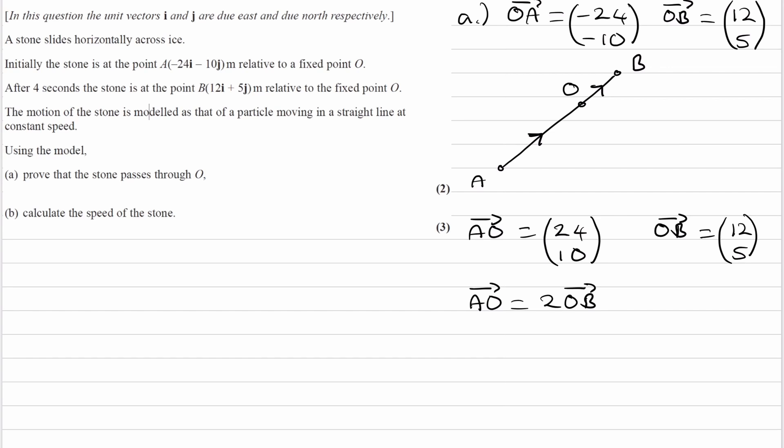Let's assume a scenario where AO equals negative two lots of OB. What would this look like? Here is A, here is O. Here is the line that connects the two things.